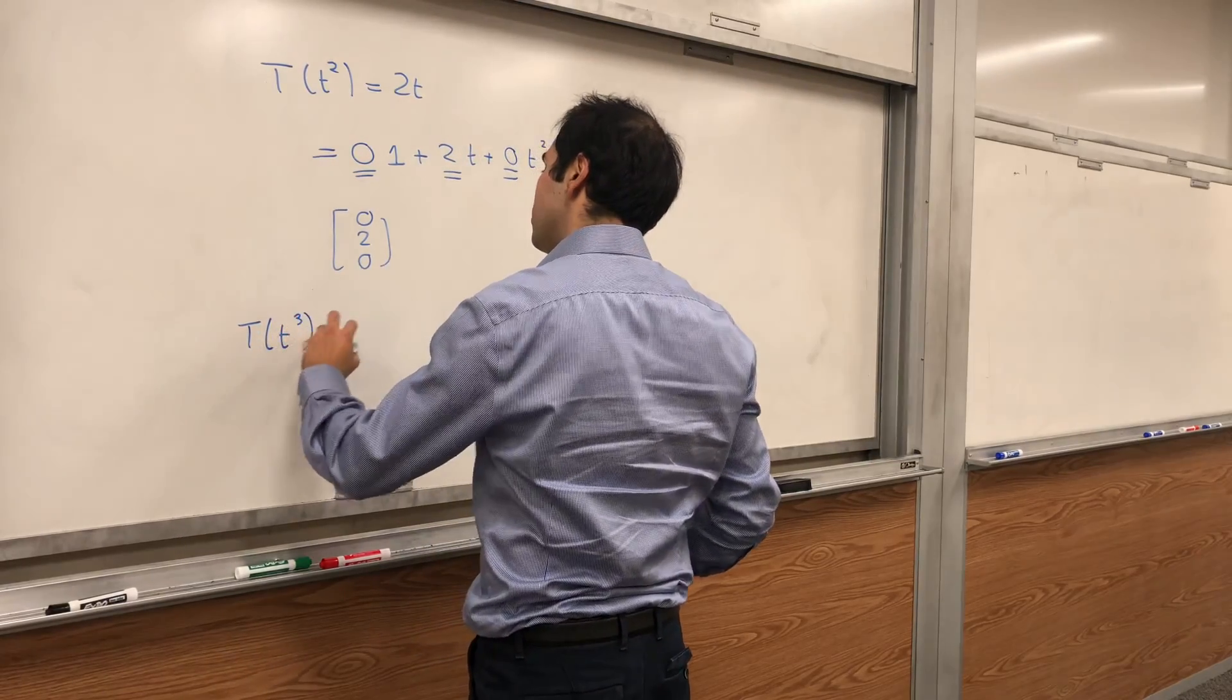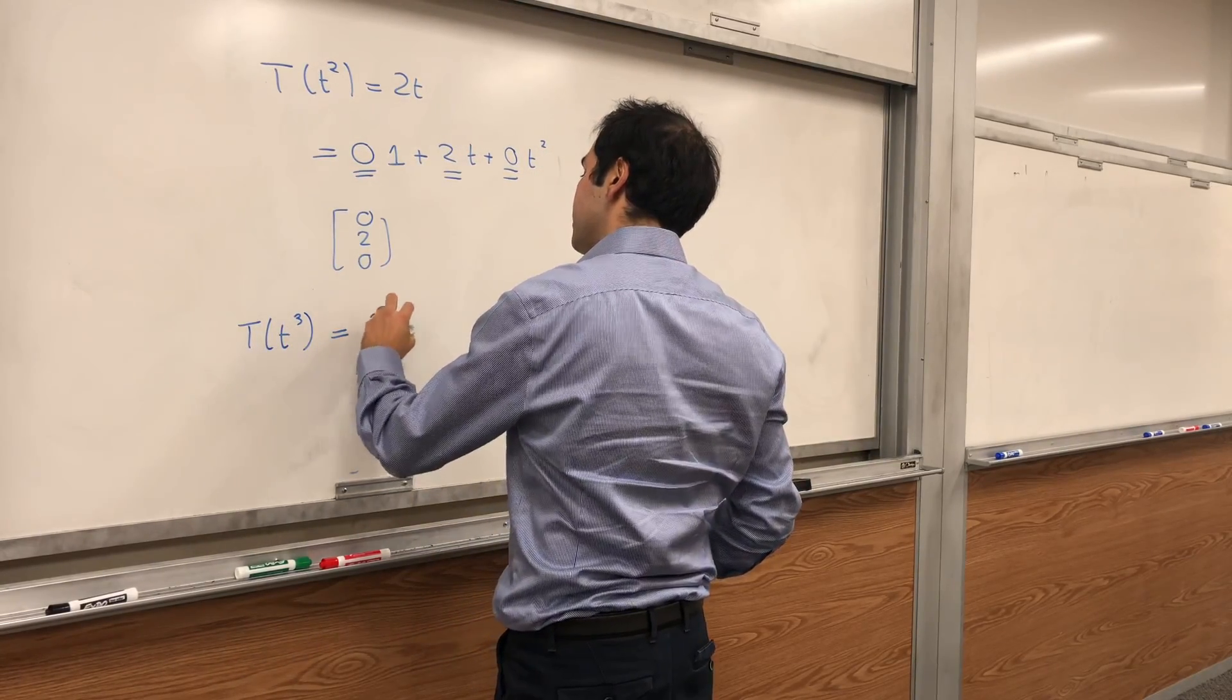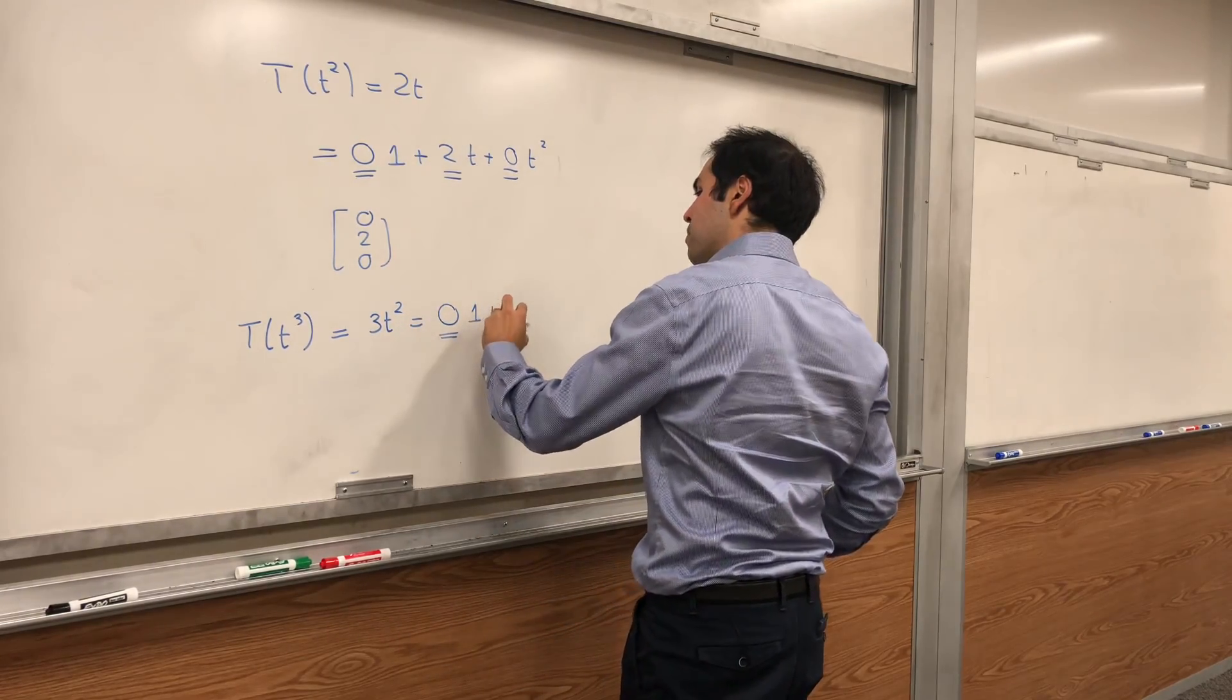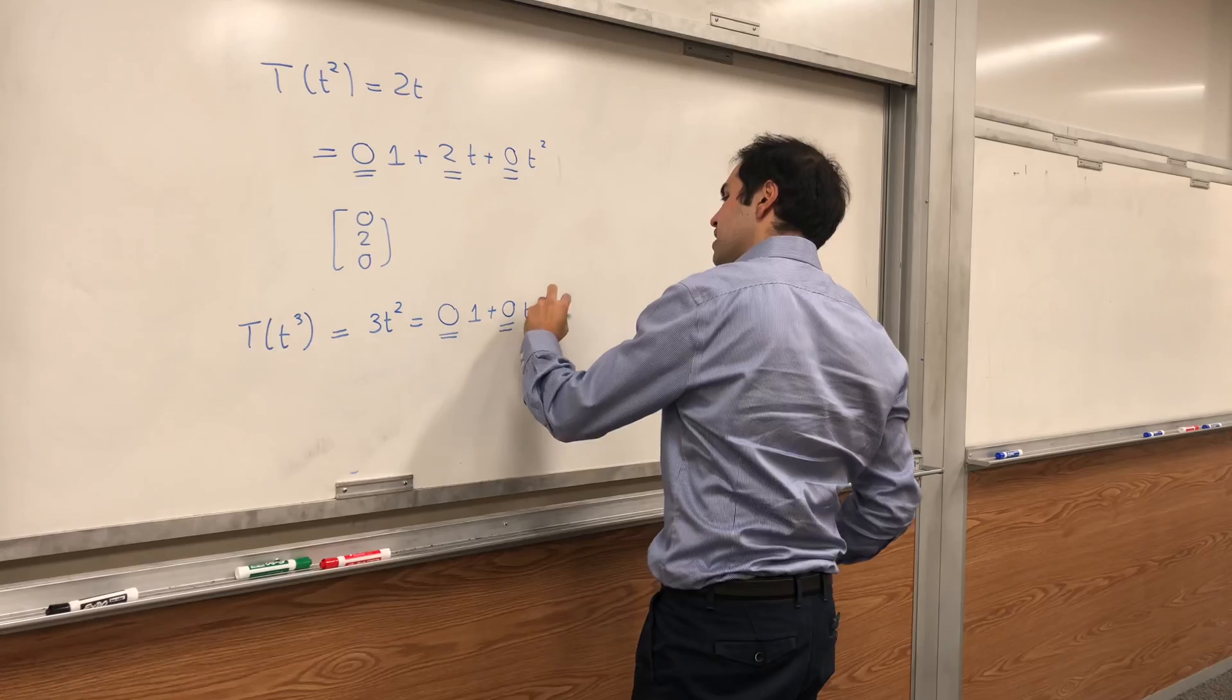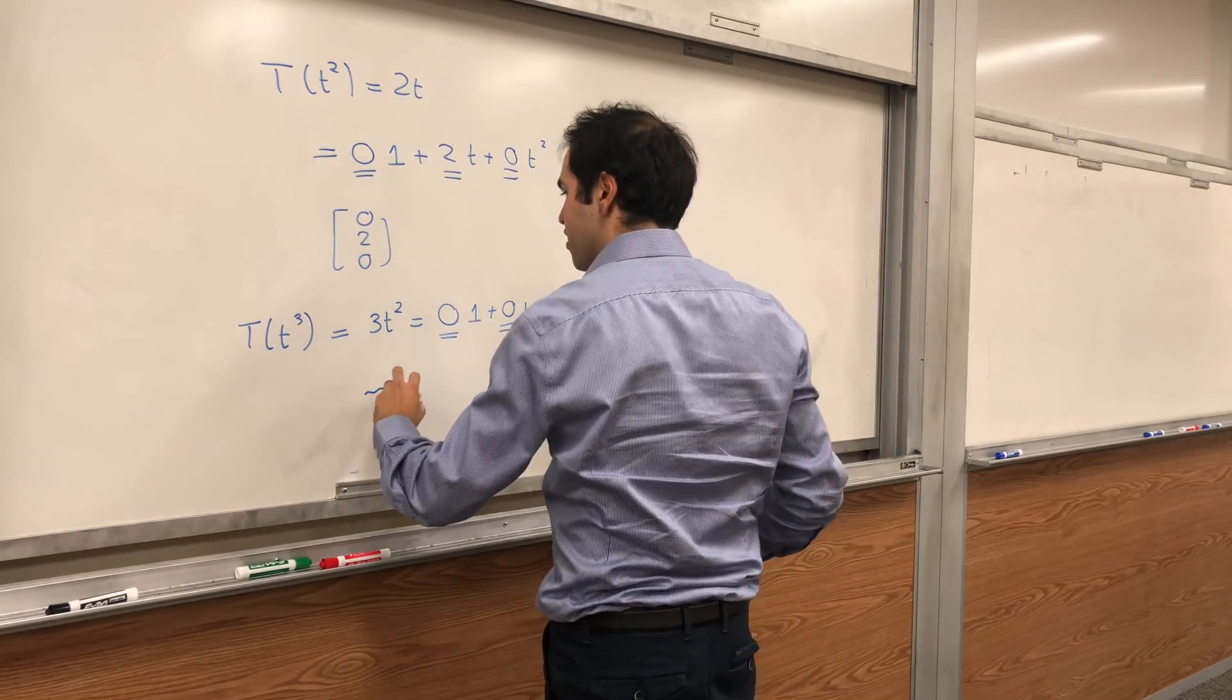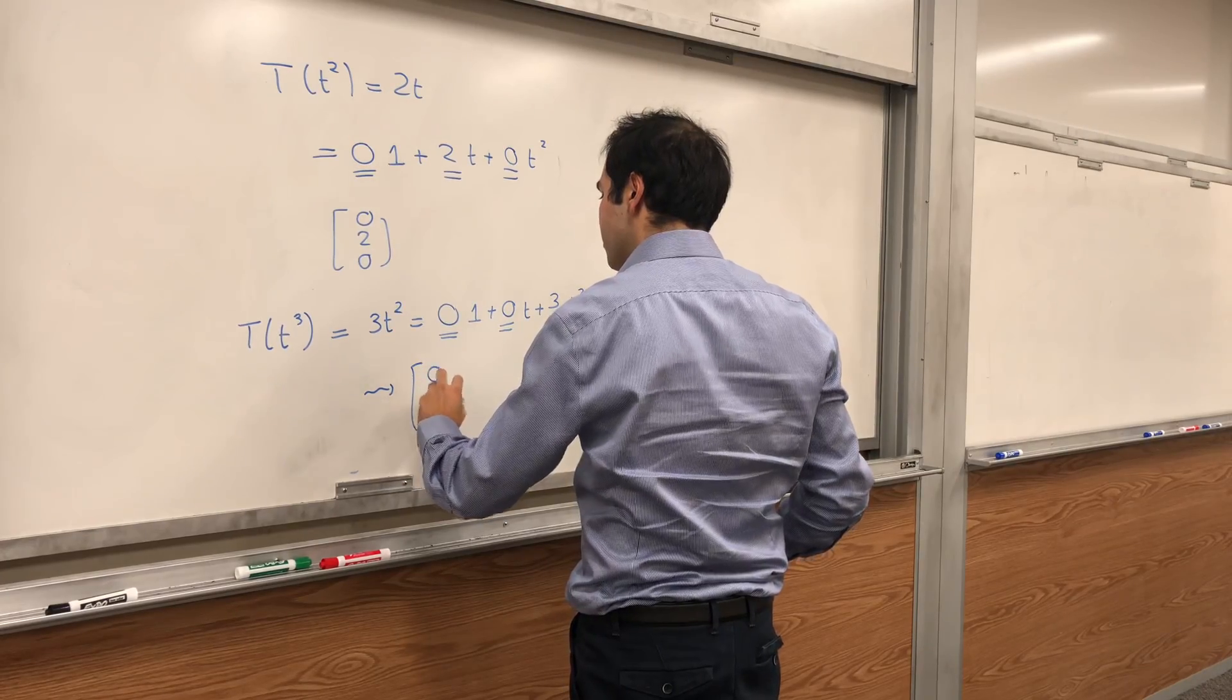And lastly, T of t cubed, that is 3t squared, and that is 0 times 1 plus 0 times t plus 3 times t squared. It tells us our third column is 0, 0, 3.